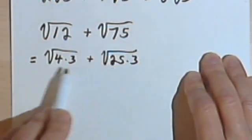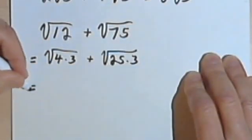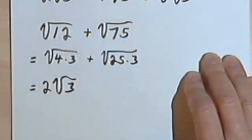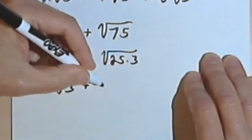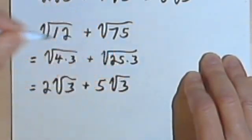Now I can pull out the perfect squares from both of these. So the square root of 4 is 2, that means I have 2 times the square root of 3. And taking the square root of 25, which is 5,